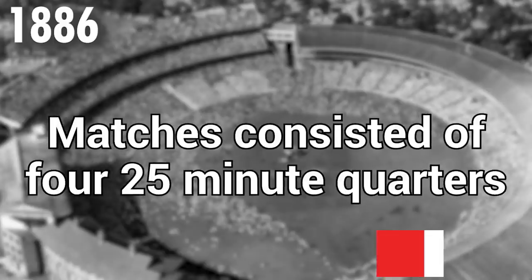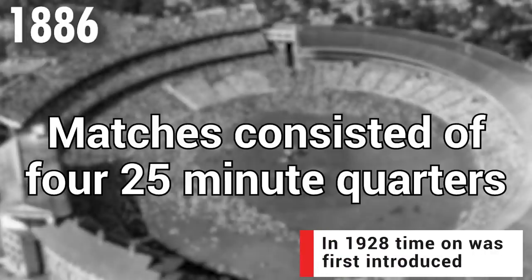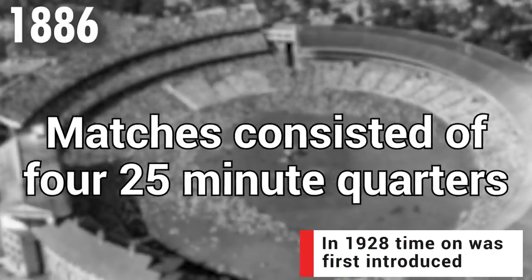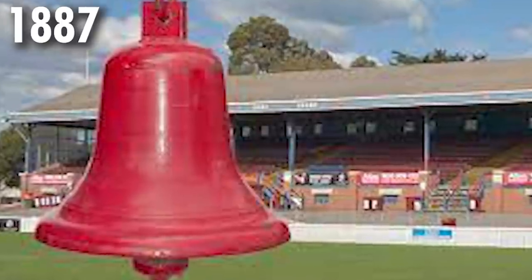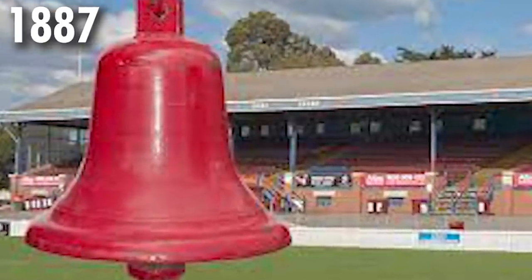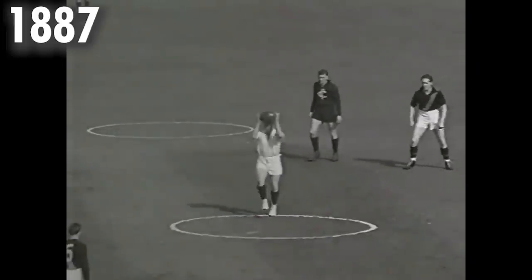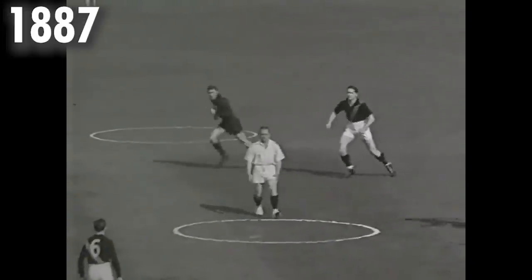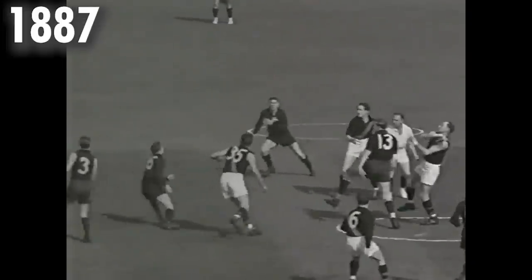In 1886, matches now consisted of four 25-minute quarters rather than just two 50-minute halves. Then just a year later in 1887, the introduction of timekeepers and the bell system was added, and field umpires were required to bounce the ball up at the start of each quarter instead of throwing it up.